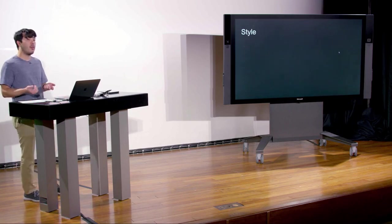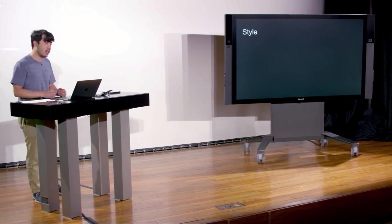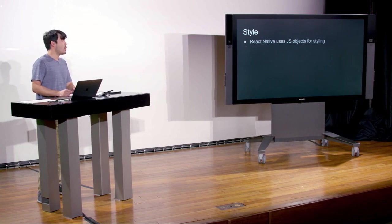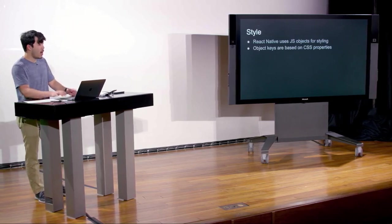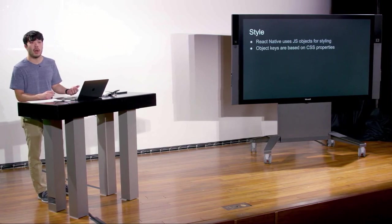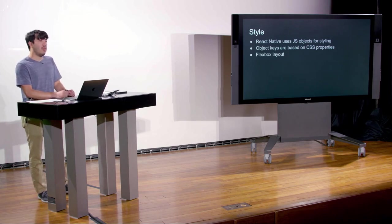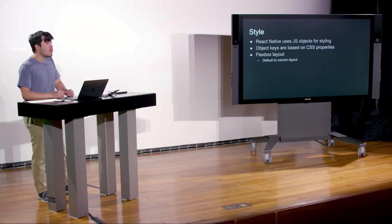How are we going to style those components? In React Web, we added a class name and styled with CSS. In React Native we don't have CSS. Instead, React Native handles styling by using JavaScript objects. That gives us the ability to use dynamic styles. Object keys in these objects are based on CSS properties — things like marginTop, marginBottom, padding. The layout system is Flexbox, which is almost exactly the same as in web, with the key difference that rather than defaulting to row, we default to column layout.